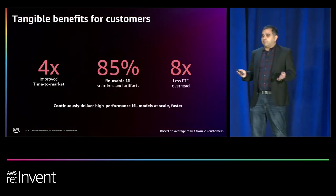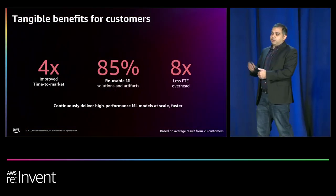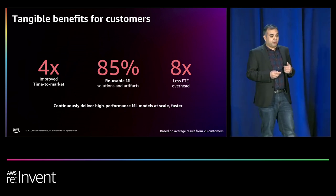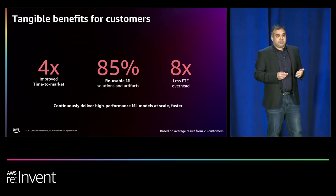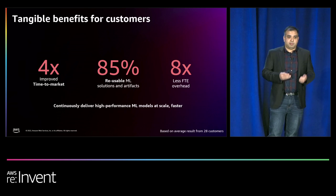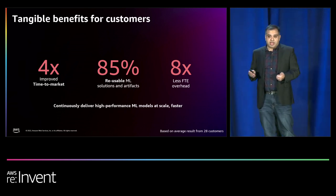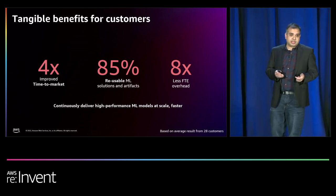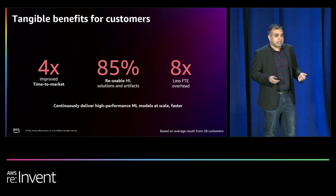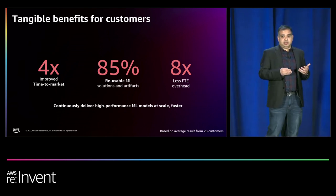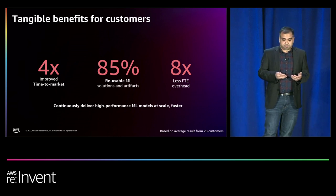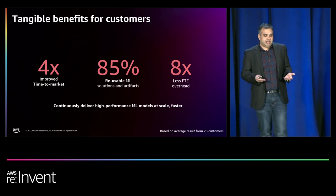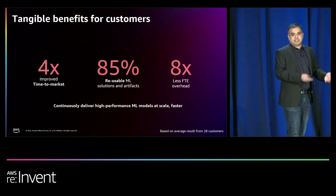We've been on this journey for a couple of years. Customers report their time to market from initial idea to first production version of the model has decreased by four times. They see 85% reusability of artifacts across multiple teams and multiple use cases. As a result, they report a reduction of overhead for their machine learning engineers and data scientists, which makes their job more exciting — instead of doing ops, they can do more data science and more testing.